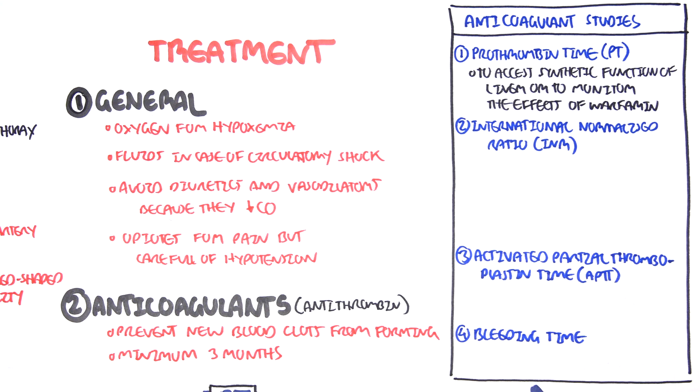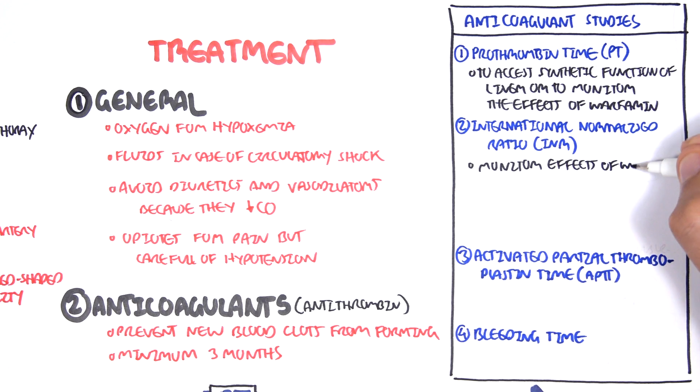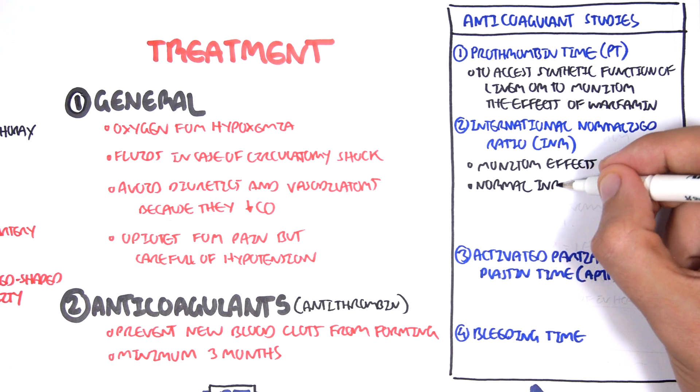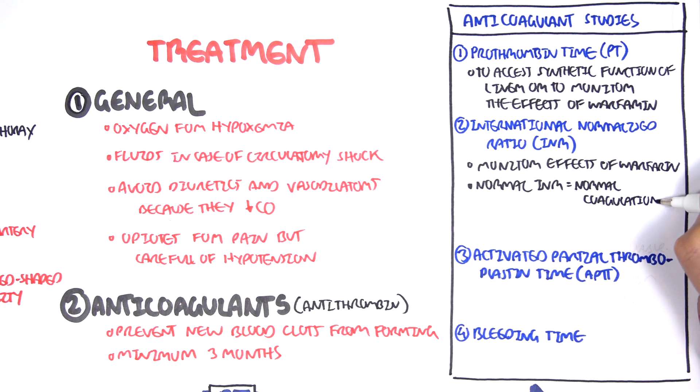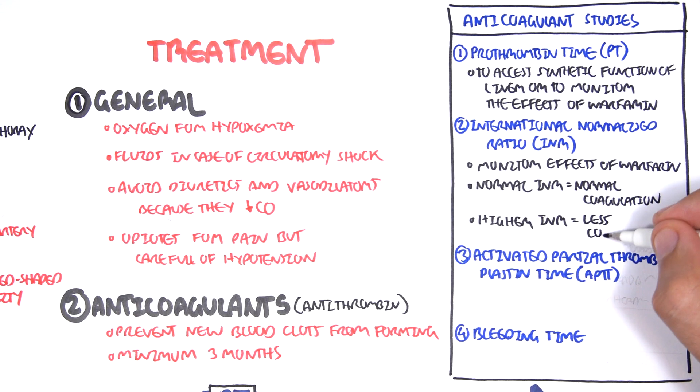The international normalized ratio, your INR, is essentially like your PT, but it's a calculation, and it's to monitor the effects of warfarin. So your extrinsic pathway clotting factors in your common pathway. The normal INR means that you have normal coagulation. A higher INR means that you are less coagulable. A normal INR is 1, you have normal coagulation. A higher INR, meaning 2 or 3, means that you are less coagulable, you will bleed more easily.